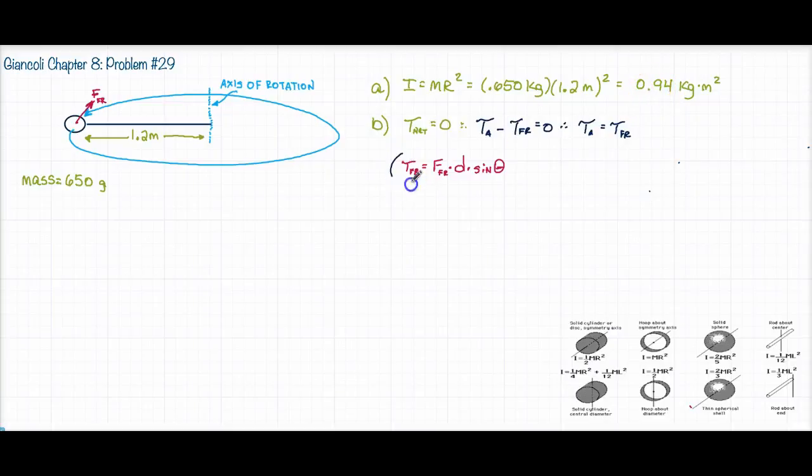And so now I'm ready to substitute this in for the frictional torque. And so I can say the applied torque, in order to move it at a constant velocity, needs to be frictional force times the lever arm distance D times the sine, and this is going to be 90 degrees.